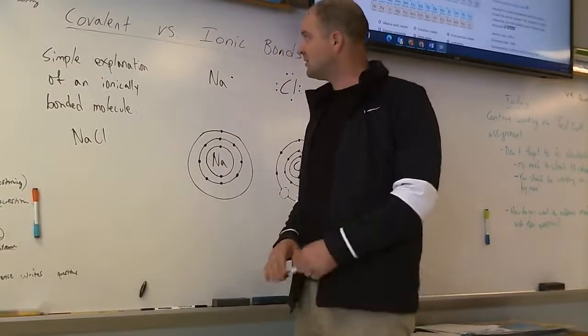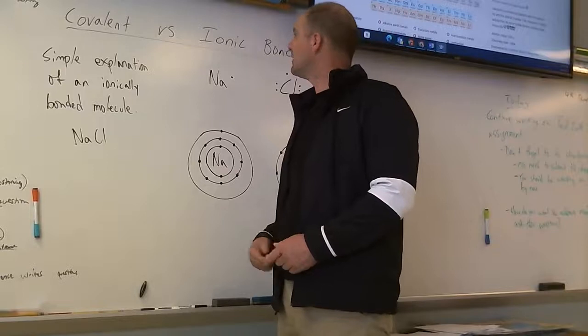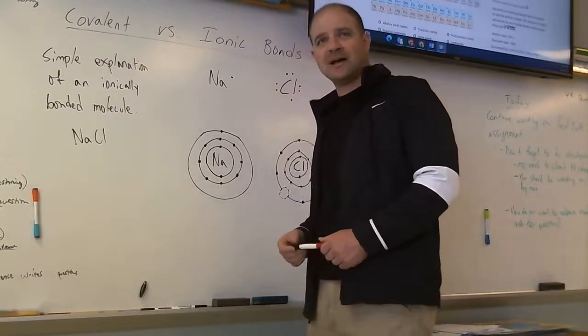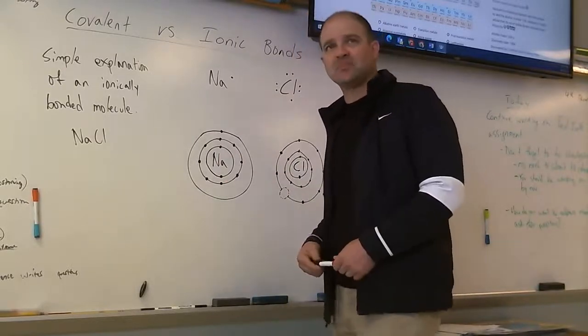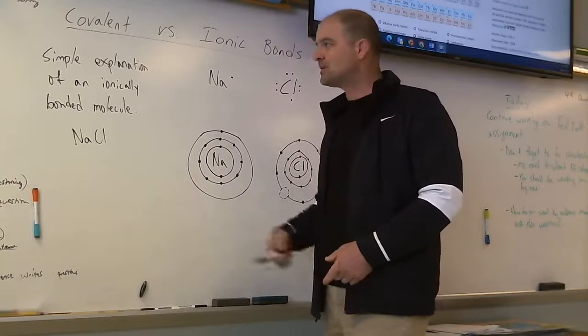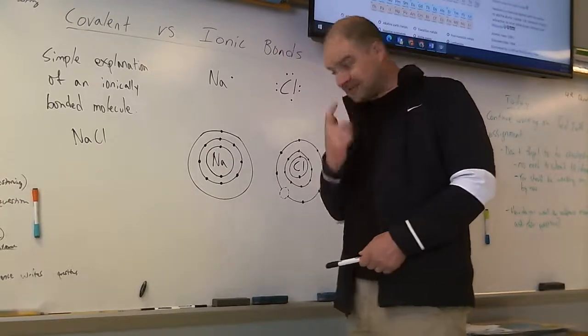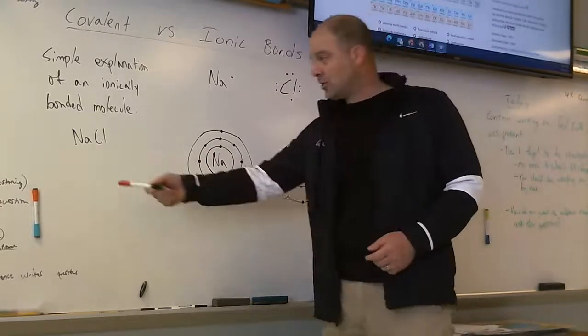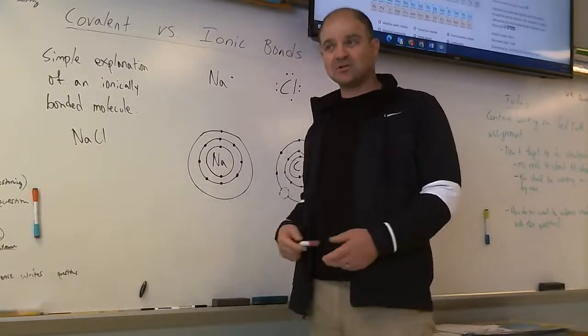Okay, this quick little lesson we've got covalent versus ionic bonds. They're both types of molecular bonds. I'm going to do a really simple explanation of an ionic bonded molecule, very well known: NaCl, sodium chloride, otherwise known as table salt.